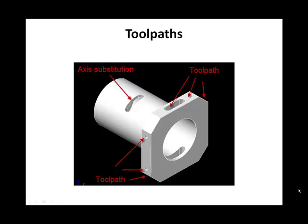Add toolpaths as shown. Use Transform Rotate to copy toolpaths to the other sides of the part and apply an A-axis substitution toolpath to the slot on the cylinder.